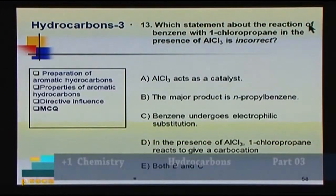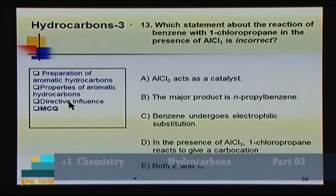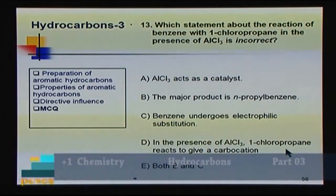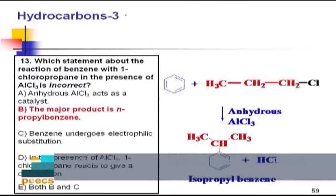Question 13: Which statement about the reaction of benzene with 1-chloropropane in the presence of aluminum chloride is incorrect? A) AlCl₃ acts as catalyst, B) major product is normal propylbenzene, C) benzene undergoes electrophilic substitution, D) 1-chloropropane reacts to give a carbocation, E) both B and C. The primary carbocation formed rearranges to the secondary isopropyl carbocation, so the product is isopropylbenzene, not normal propylbenzene. Statement B is incorrect. Answer: B.